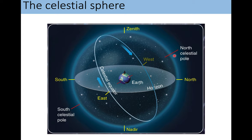This celestial sphere rotates through the poles from the east. Everything rises in the east and sets in the west. We know that is because the Earth is actually rotating in this direction. So it appears to us like this celestial sphere is all rotating together, rising in the east and setting in the west.